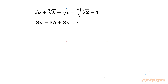Welcome back to Infigyan, my dear friends. In today's video we have one very interesting radical puzzle. Here we have to evaluate 3A plus 3B plus 3C, given the equation: cube root of A plus cube root of B plus cube root of C equals cube root of (cube root 2 minus 1).